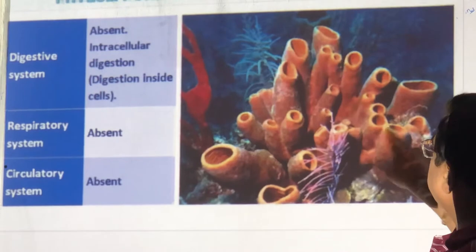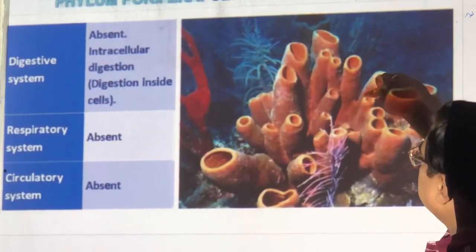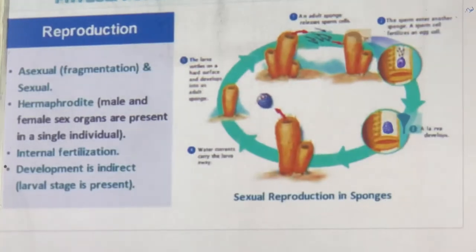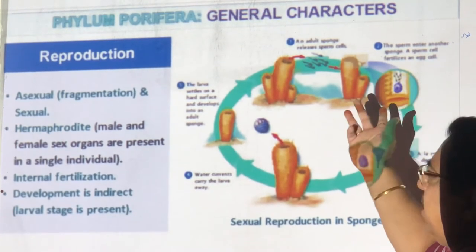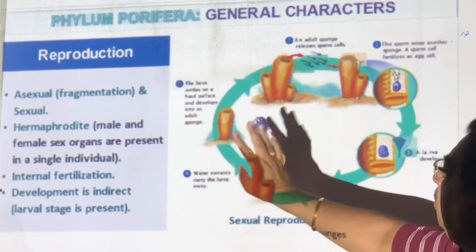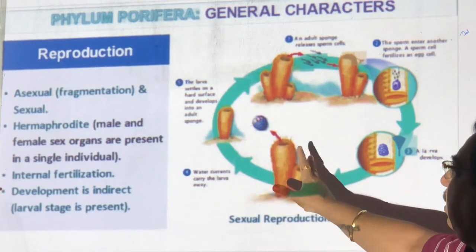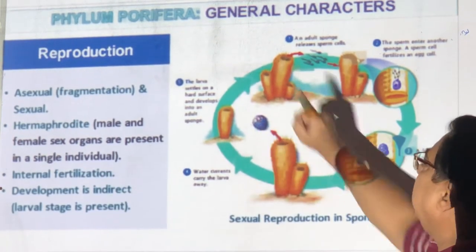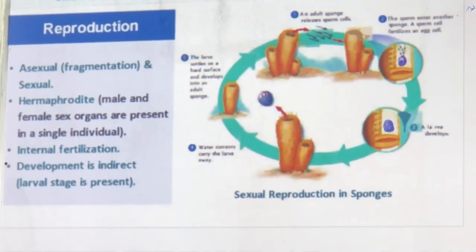Water enters through small ostia, circulates inside the spongocoel cavity, and comes out of the large opening. Reproduction in sponges is both asexual and sexual. If you break them they grow again (fragmentation). They are hermaphrodite — the same body has both male and female organs. Fertilization is internal, and a larval stage is present — a larva comes out and then becomes attached.